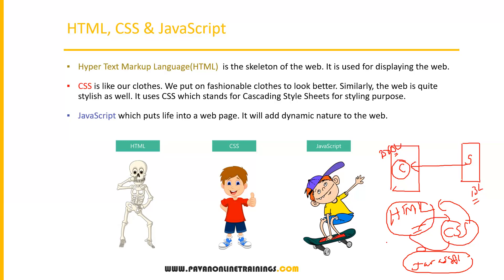To make web pages dynamic or to apply dynamic behavior, we add JavaScript. HTML takes care of the skeleton or structure, CSS handles the design and look and feel, and JavaScript adds the dynamic nature to the website. Think of it this way: HTML is the skeleton of the web used for displaying page structure; CSS is like fashionable clothes — it styles the web using Cascading Style Sheets; and JavaScript puts life into the webpage, adding dynamic behavior.